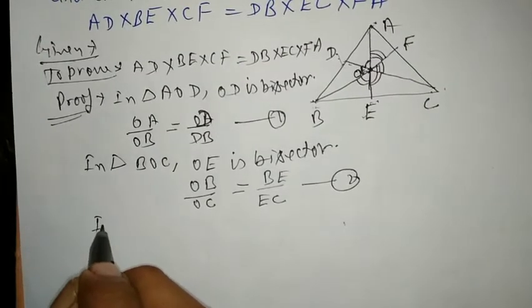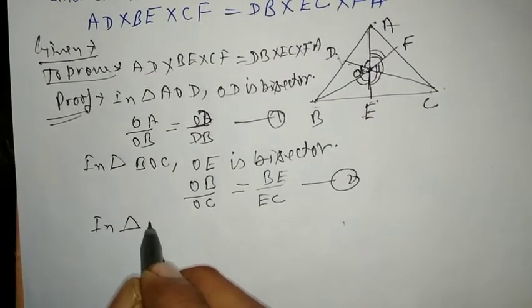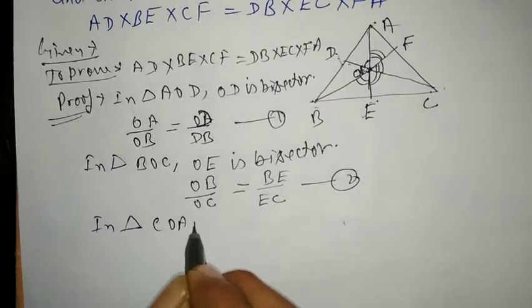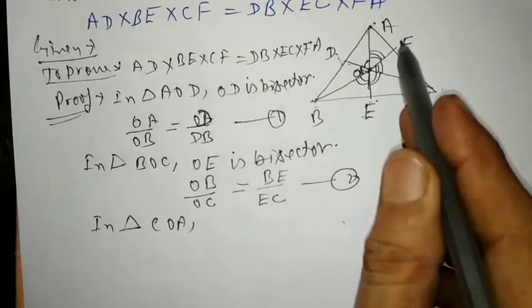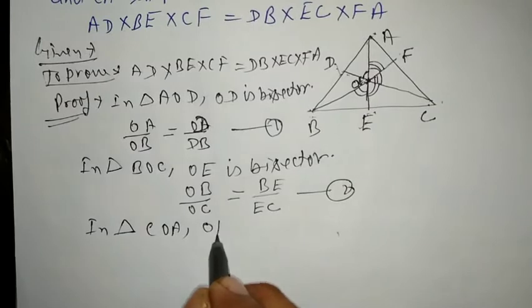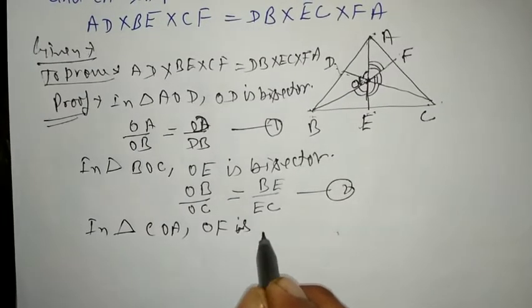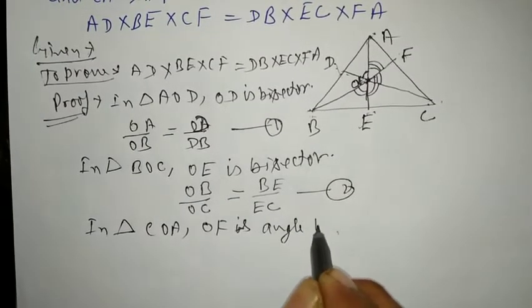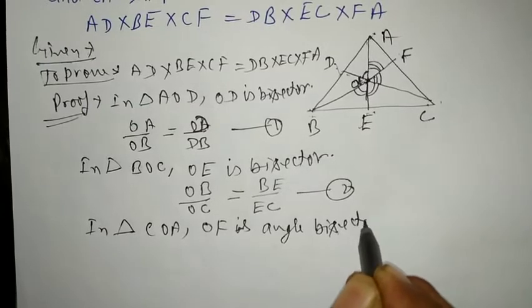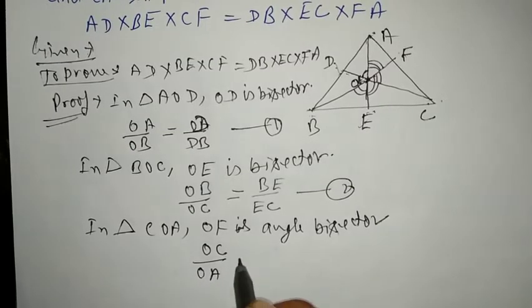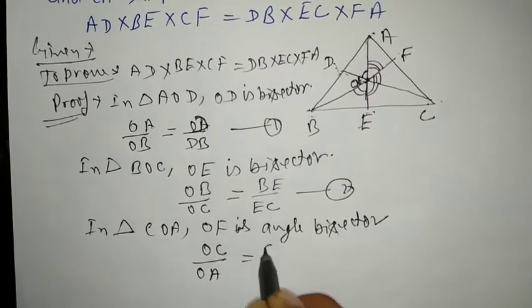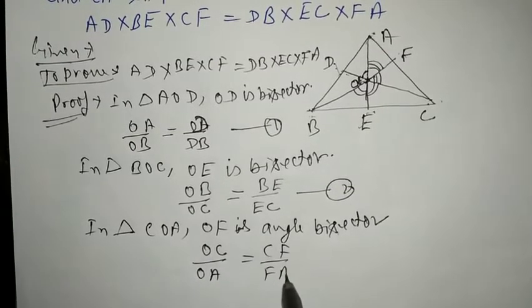In triangle COA, OF is the angle bisector. Therefore OC upon OA is equal to CF upon FA. This is equation 3.